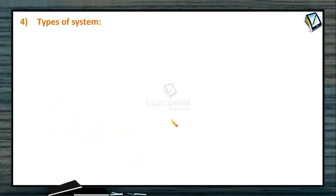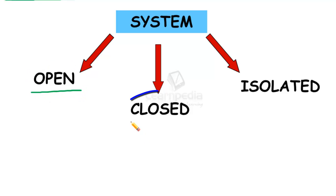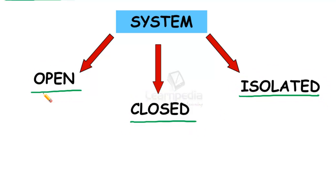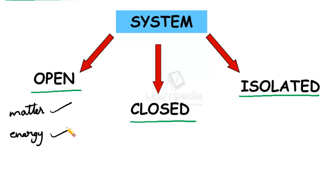Next, we have various types of systems: the open system, the closed system, and the isolated system. In the case of an open system, both exchange of matter as well as exchange of energy with the surroundings takes place — both matter and energy can be exchanged between the system and the surroundings. For example, animals and plants are thermodynamically open systems, because energy flows and matter also moves in and out of the animal and plant body.